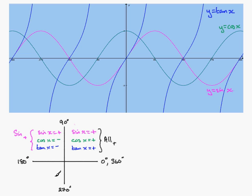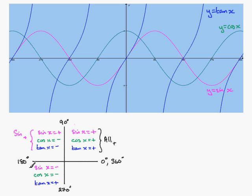Moving on to the third quadrant, between 180 and 270 degrees: sine is negative, cosine is also negative and below the x-axis. But when I look at tan of x, I notice that in the interval between 180 and 270 degrees it's above the x-axis, so it's positive. So in the third quadrant, the only positive value is tan of x.